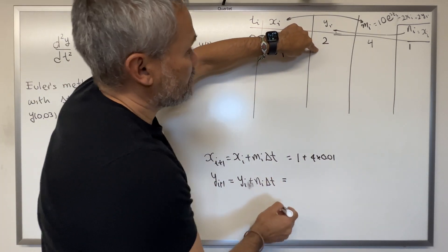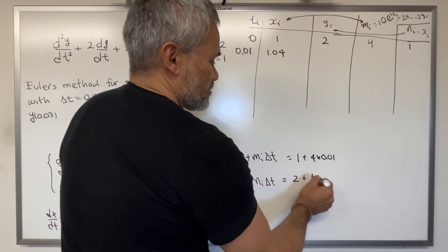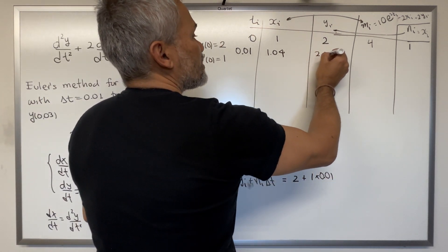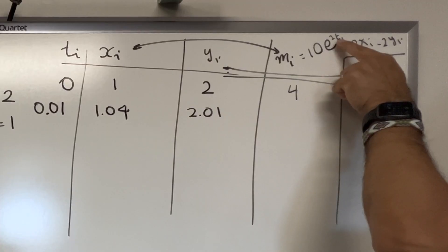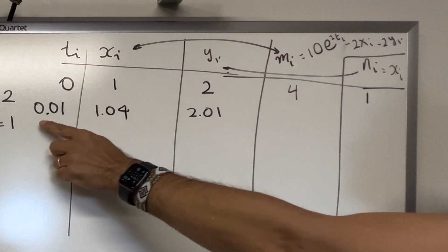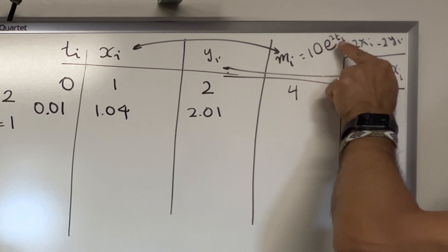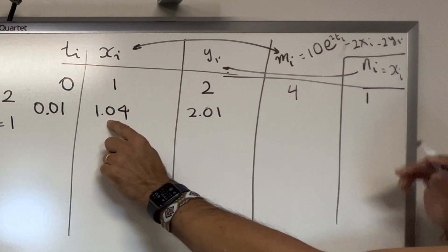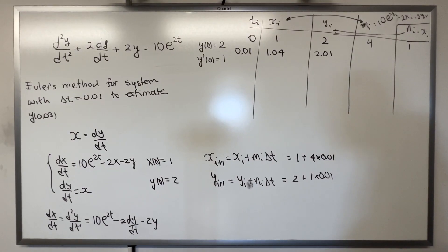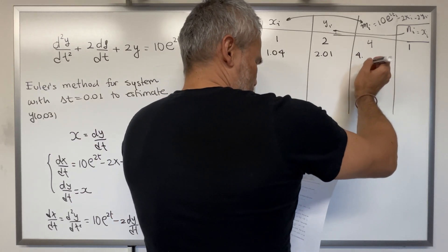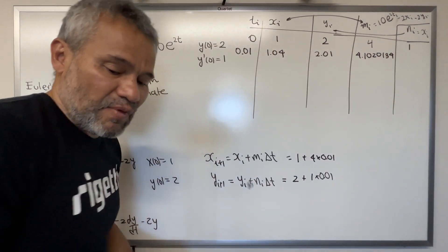The next value for y is the previous one plus the slope times 0.01, giving y₁ = 2.01. For the next row, we substitute t = 0.01 into the m₂ᵢ formula: 10e^(0.02) − 2(1.04) − 2(2.01), which gives approximately m₁ = 4.1020134.